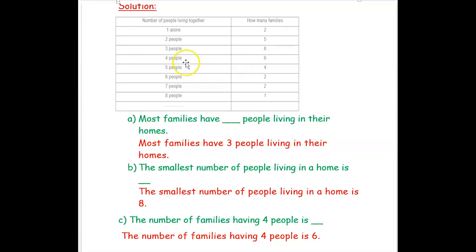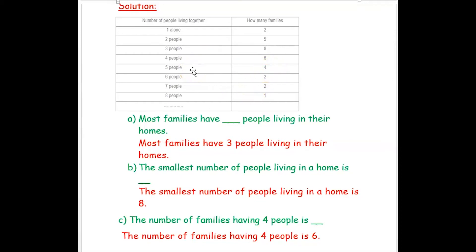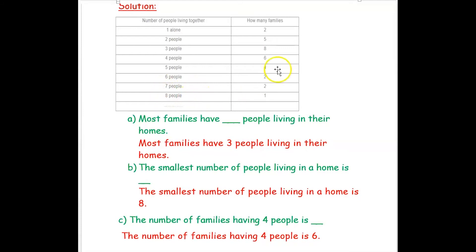Six of my friends told four people are living in their house. Four of my friends told five people are living in their house. Two of my friends told there are six people in their house, another two friends told there are seven people, and only one friend said there are eight people living together. Each number in the families column represents one friend.